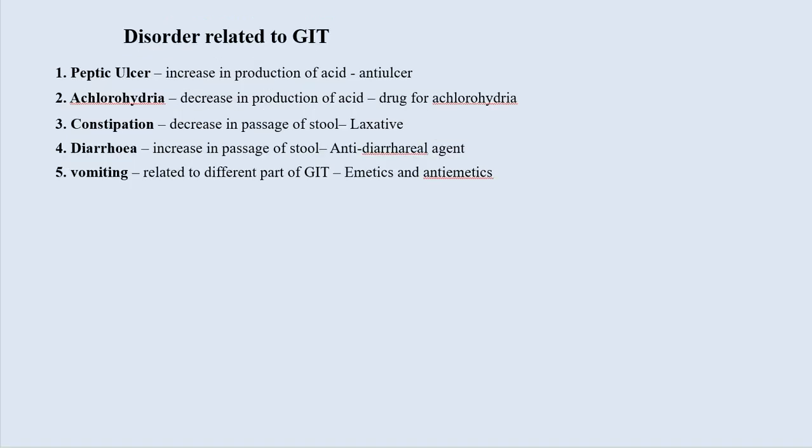These are the different disorders we will study in today's lecture. First one is peptic ulcer — nothing but the increase in production of acid — and drugs used to treat it are known as anti-ulcer drugs. Second disorder is achlorhydria, which is the decrease in production of acid. Third one is constipation — decrease in passage of stool — and drugs used are known as laxatives. Fourth is diarrhea — increase in passage of stool — and drugs used are anti-diarrheal agents.